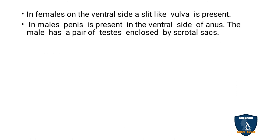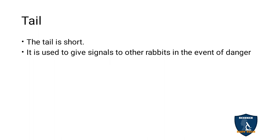In females, a slit-like vulva is present on the ventral side. In males, the penis is present on the ventral side of the anus, and the male has a pair of testes enclosed by the scrotal sacs where sperms are stored. The tail is short and helps give signals to other rabbits in the event of danger.